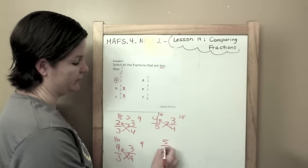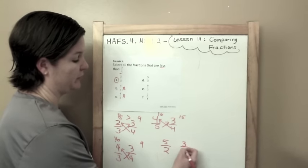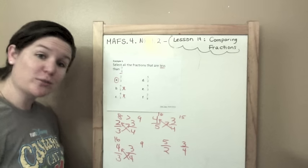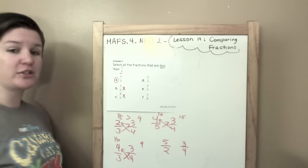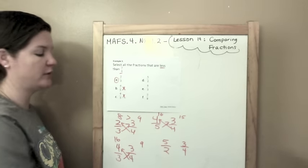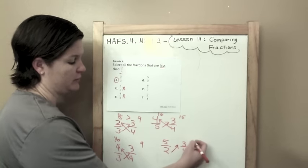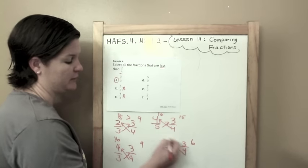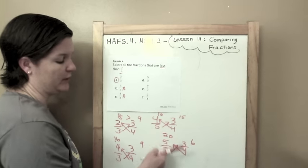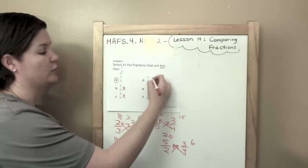5 halves and 3 fourths. I know that this one is not going to be right either because 5 halves is a fraction greater than 1 because the numerator is greater than the denominator. But I'll show you still. 2 times 3 is 6. 4 times 5 is 20. 20 is with the 5 halves which is greater. So no.